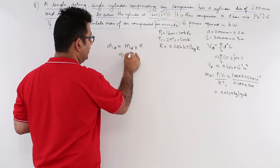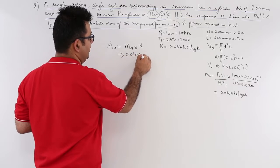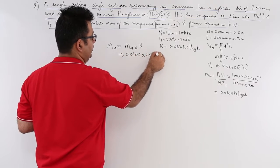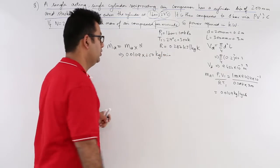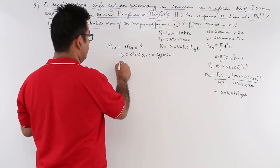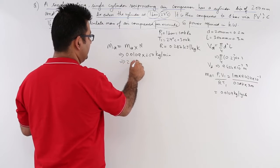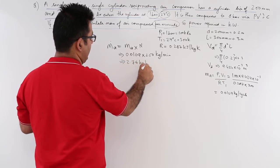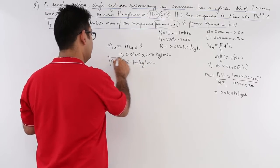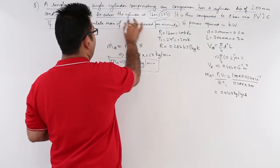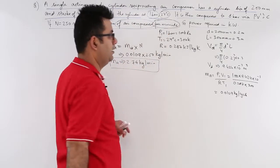So you will have 0.0109 into 250. This would give you kilogram per minute. That value is 2.74 kg per minute. So this is the mass of air compressed per minute.